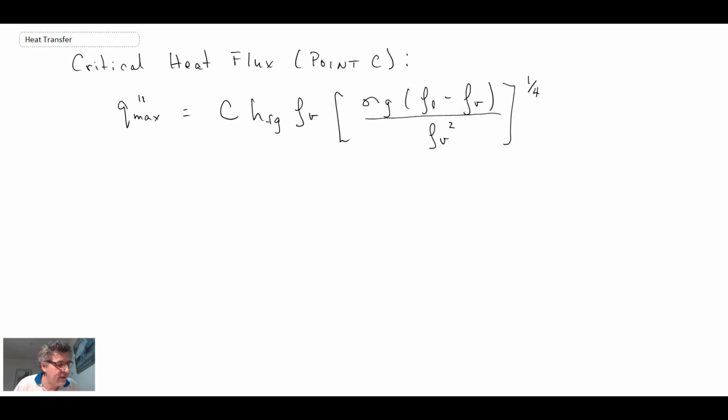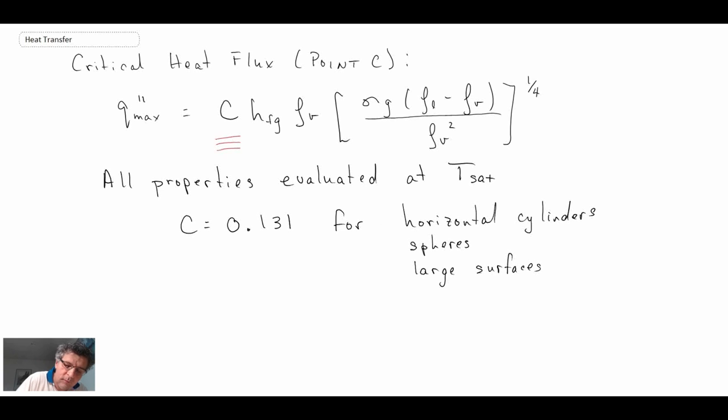So this is the equation for the critical heat flux. And as before, all properties are evaluated at T-SAT. And notice in this equation, we have this constant C. So C is going to vary between 0.13 and 0.149, depending upon the shape that we are doing the calculation for. And again, like before, be careful with HFG. Make sure that it's in joules per kilogram Kelvin. And surface tension, gravitational constant, those are all pretty straightforward.